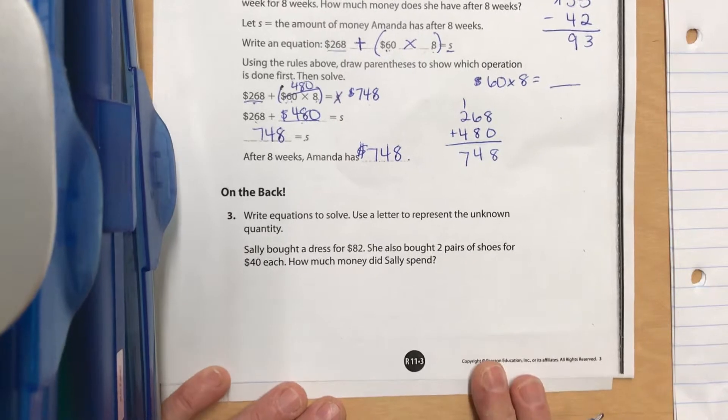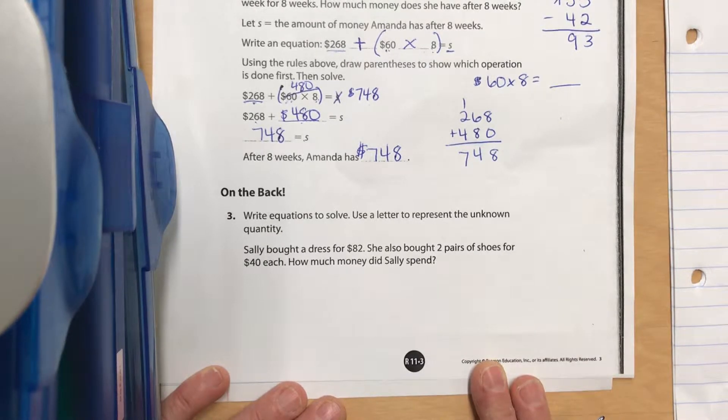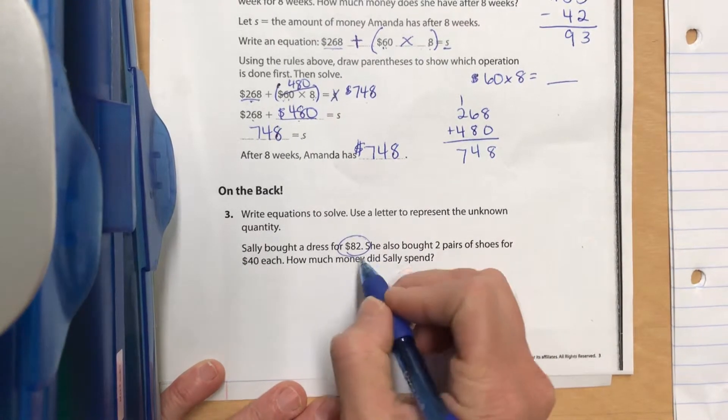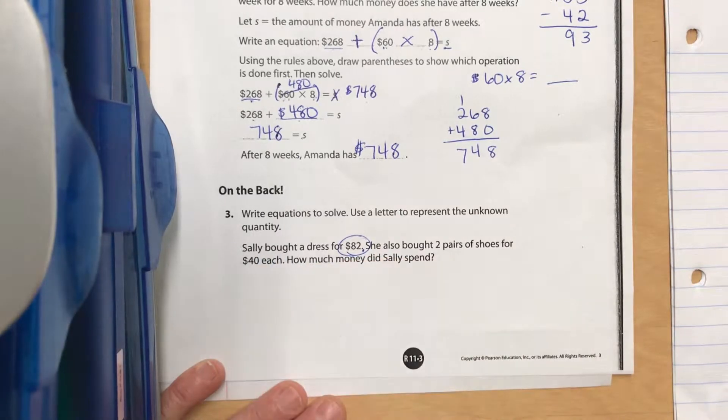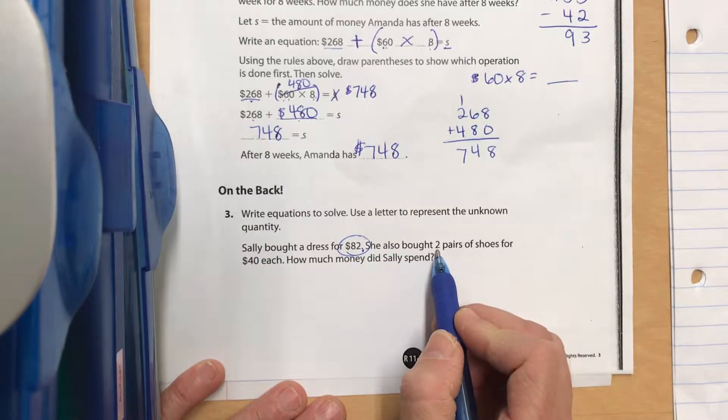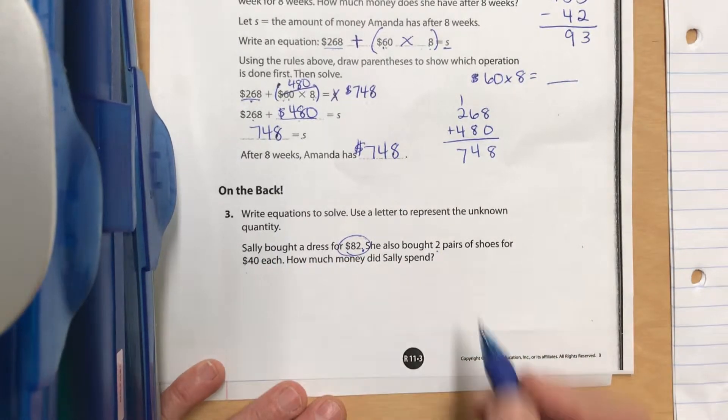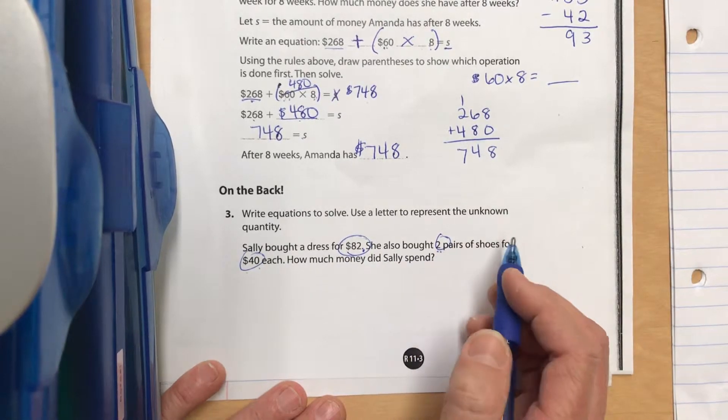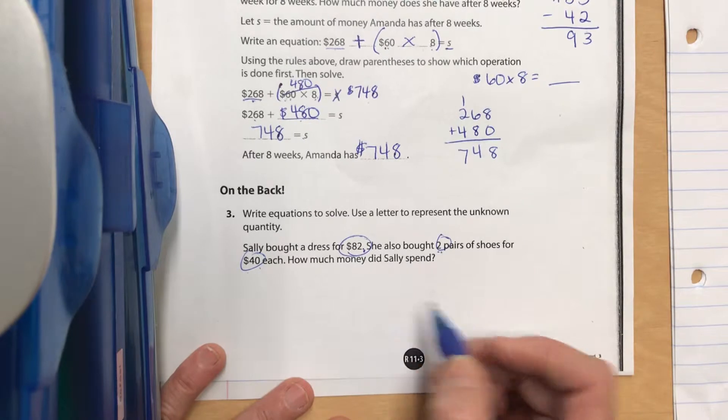After eight weeks, Amanda has $748. Now write equations to solve, use a letter to represent the unknown quantity. Sally bought a dress for $82. She also bought two pairs of shoes for $40 each. That's a separate sentence and separate problem. How much money did she spend total?